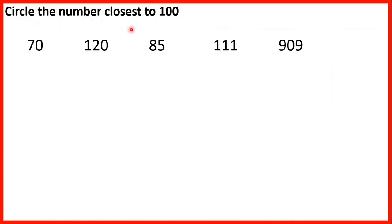Circle the number closest to 100. So first we have 70, that's 30 less than 100, because 70 plus 30 is 100. Or if we subtract 70 from 100 we'll get 30. 120 is 20 more than 100. 85 is 15 less, because 85 and 15 make a number bond to 100. If we subtract 85 from 100 we'll get 15.